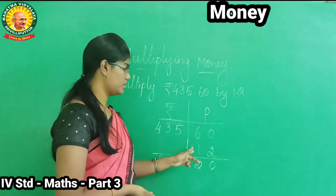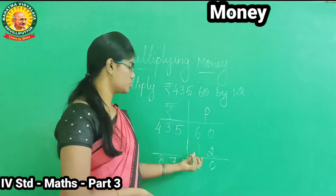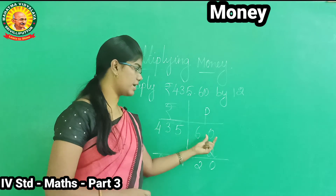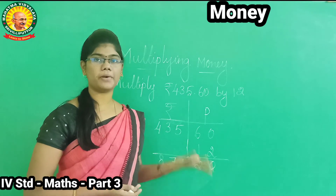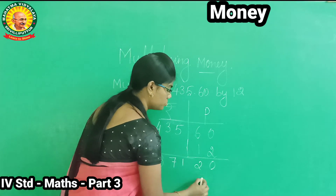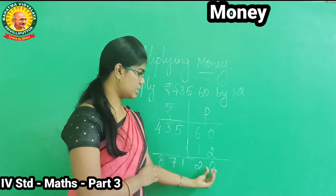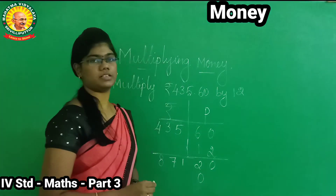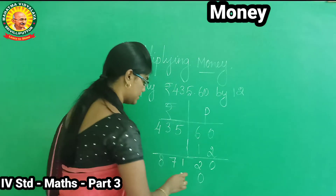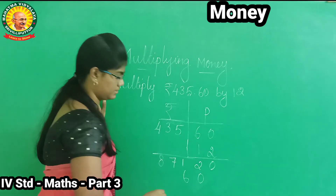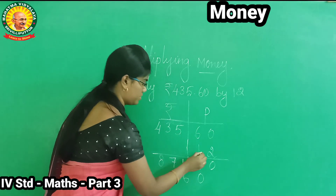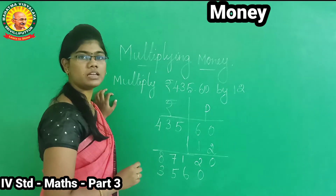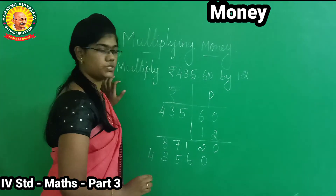Next, multiply by 1. For the second row, 0 multiplied by any number is 0 — write 0 in the first place, then second place. 1 times 6 is 6. 1 times 5 is 5. 1 times 3 is 3. 1 times 4 is 4. Super.